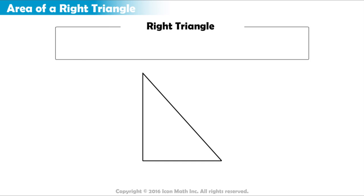A right triangle is a triangle with one angle that measures exactly 90 degrees.